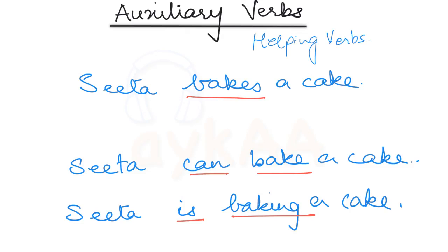That means in the first sentence there is only one verb, but in the next two sentences we have two verbs. So one and two.